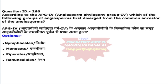Next question concerns APG4 — Angiosperm Phylogenetic Group 4 — a modern classification system for flowering plants based on molecular biology. The question asks which group of angiosperms first diverged from the common ancestor. The answer is Nymphaeales, which includes aquatic plants like water lily. This group is an early diverging grade of all flowering plants. For angiosperm questions, it is recommended to refer to recent research articles rather than textbooks.